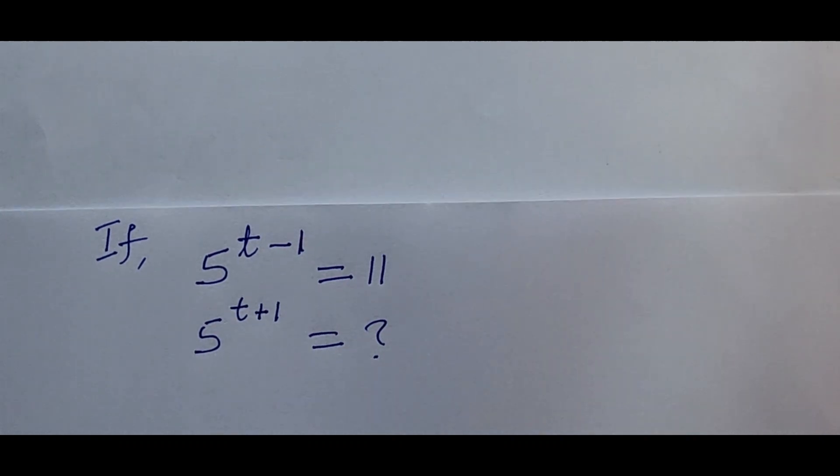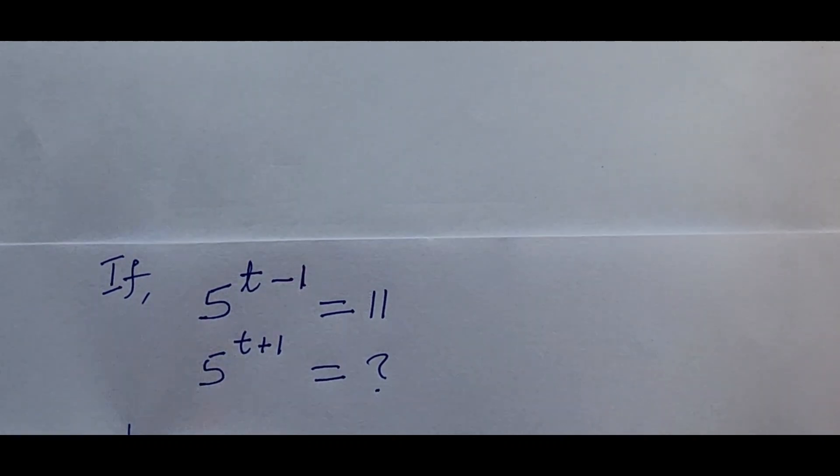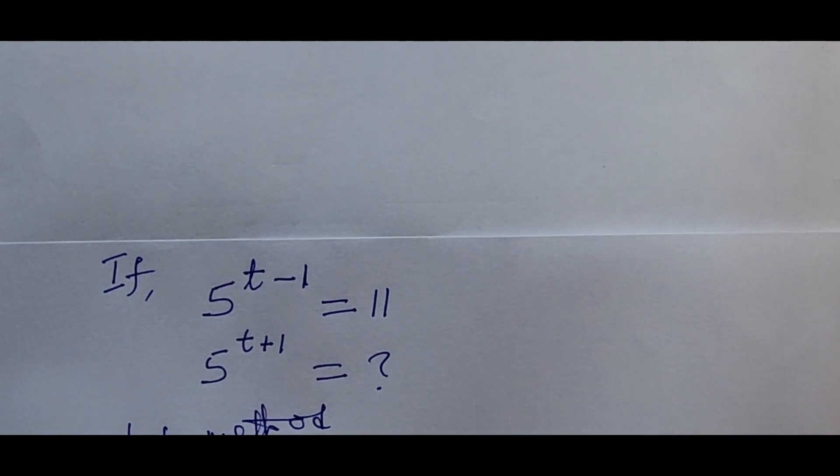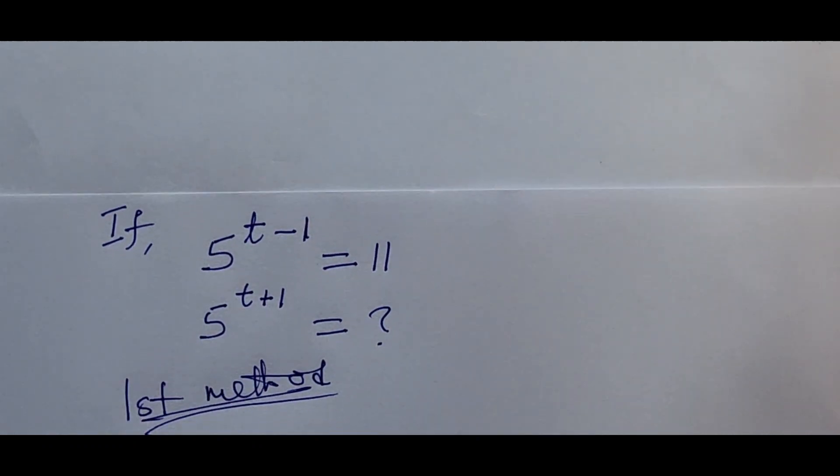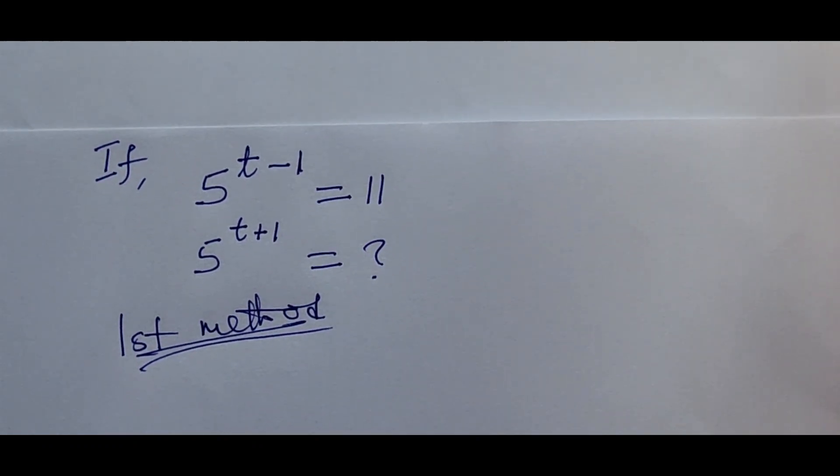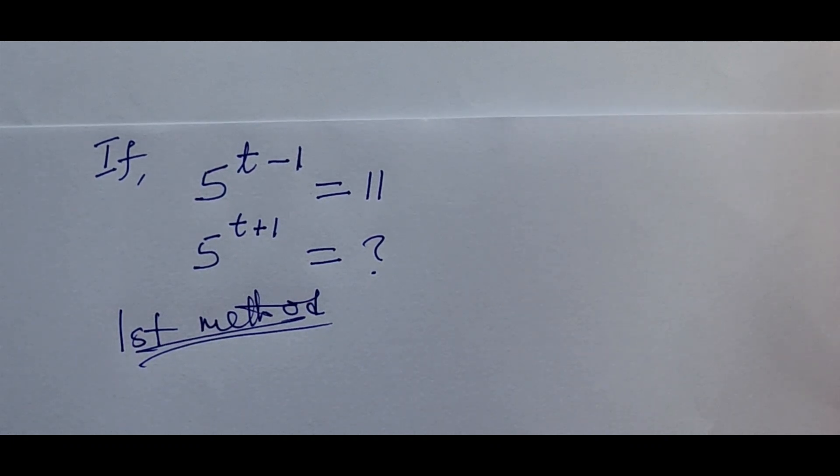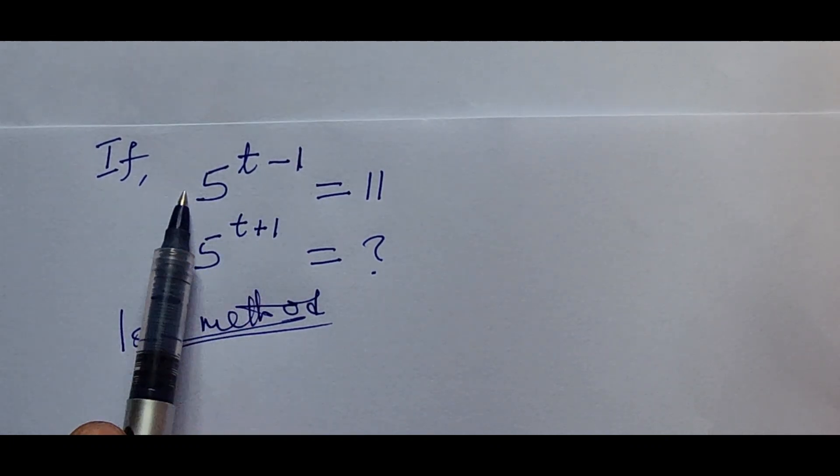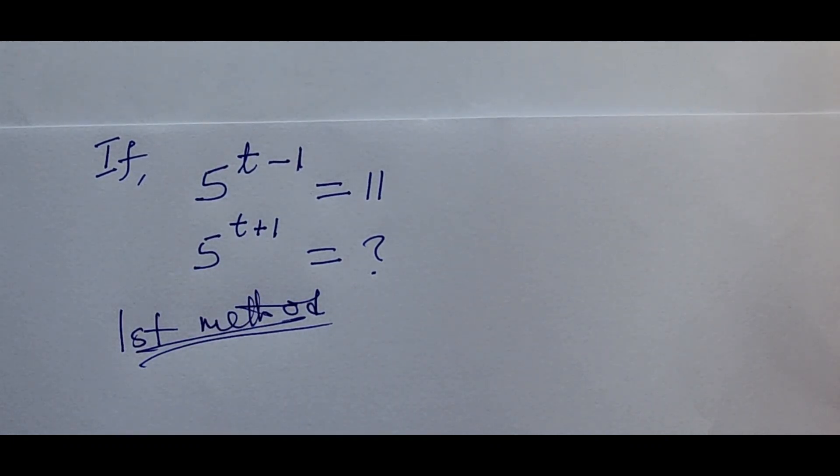So let's take the first method. In our first method, the first thing we're going to do is we want to align both sides of the equation. Now that we want to solve for the value of t separately, then substitute it into the expression here and get our value from there.